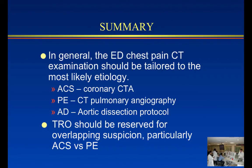In summary, ED chest pain CT should be tailored to the most likely etiology. If it's an ACS rule out, do dedicated coronary CTA. For PE, do a CTPA. For aortic dissection, do an aortic dissection protocol. The issue really occurs only when there's an overlap — particularly when there is suspicion of overlap between acute coronary syndrome and pulmonary embolism. In that case, triple rule out may in fact have a role.